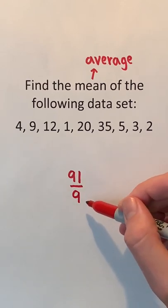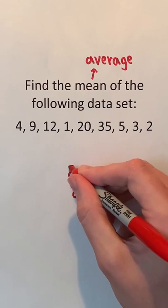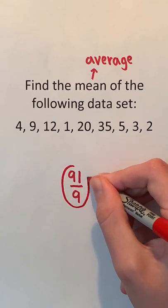91 over 9 can't be simplified, therefore 91 over 9 is the mean or average of the data set.